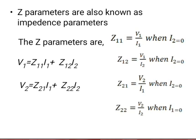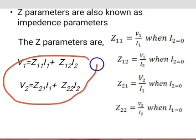Z parameters are also known as impedance parameters, where V1 is a function of I1 and I2, and V2 is a function of I1 and I2. This can be written in equations as: V1 equals Z11 times I1 plus Z12 times I2.